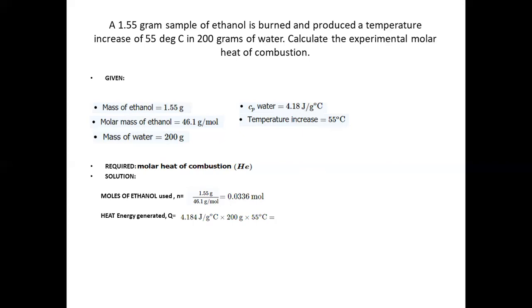Simplifying the whole expression gives us 46,024 joules. If we divide this to get kilojoules, divide it by 1,000 joules per 1 kilojoule. This gives us 46.024 kilojoules for the heat generated.